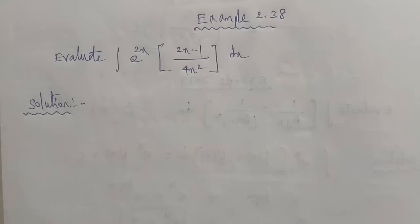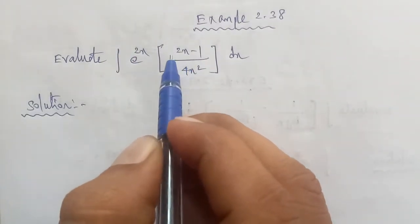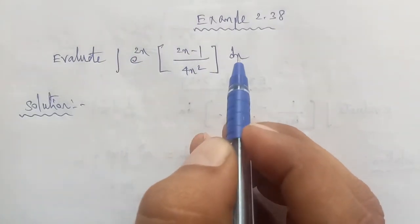Hi students, I am Gopinath, 12th Business Math. Example 2.38: Evaluate the integral of e power 2x times (2x minus 1) by 4x square dx.